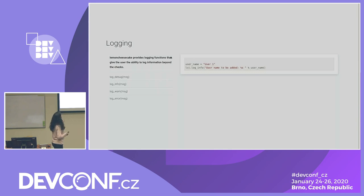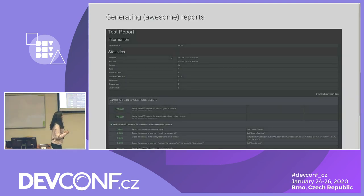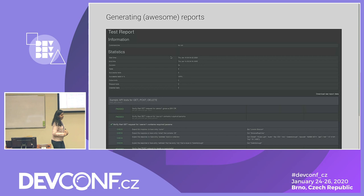Lemon Cheesecake provides logging functions that give the user the ability to log information beyond the checks. There are four different types of logging operations — it's very handy when running a test with random data and you want that data to appear in the report as tests run. The reports show how many tests were run, how many were successful, the percentage of tests, time taken, and then lists everything. The suite description given at the start appears in the reports and keeps adding as more tests run.